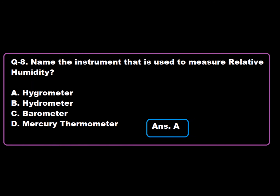Question 8: Name the instrument that is used to measure relative humidity — Option A: Hygrometer, Option B: Hydrometer, Option C: Barometer, Option D: Mercury thermometer. Option A is correct. Hygrometer is the instrument that is used to measure relative humidity. Hence, Option A is correct.